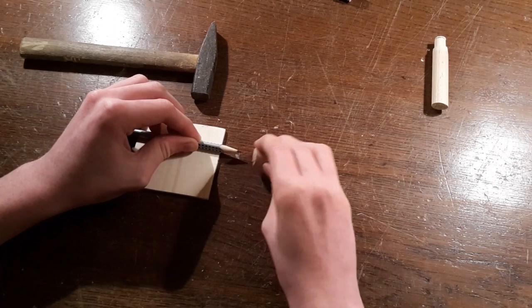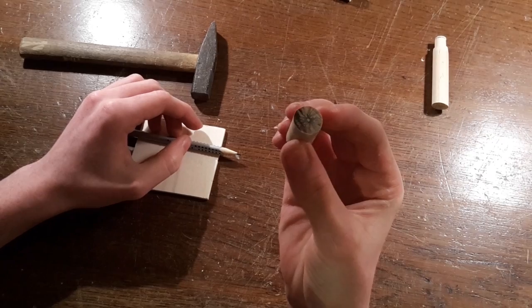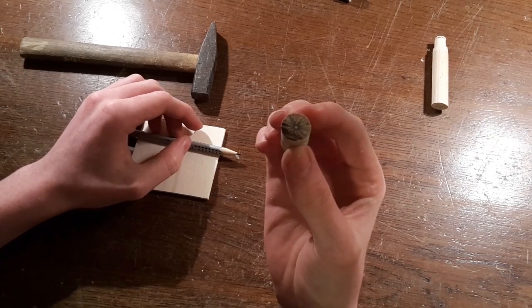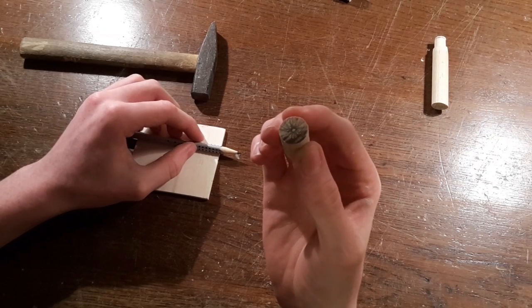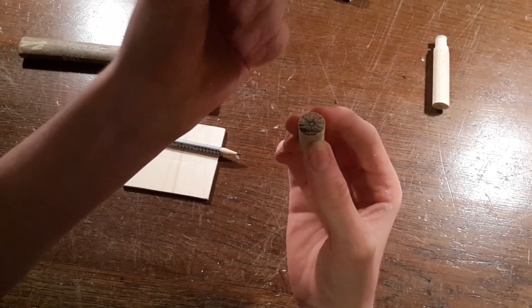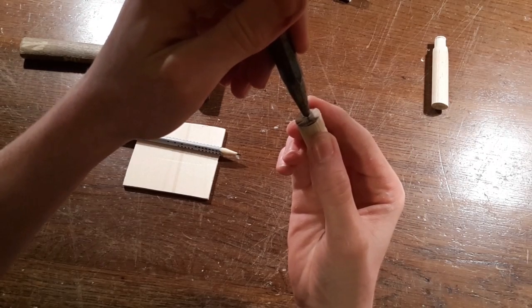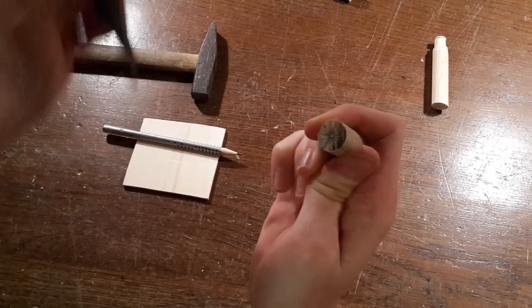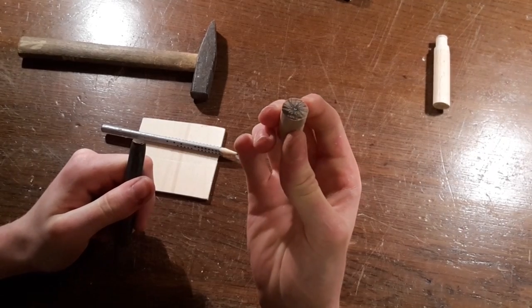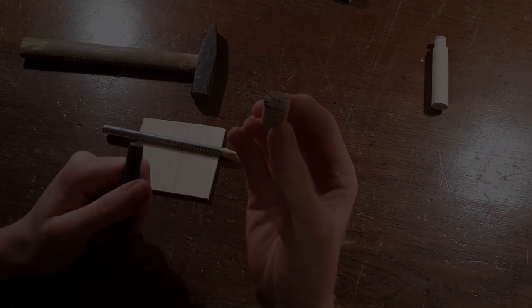So just like that. Now you've got the exact center of the dowel marked with a pencil, and then you can just maybe mark it with a center punch like that. And now you've got the exact center of your dowel marked and ready for drilling.